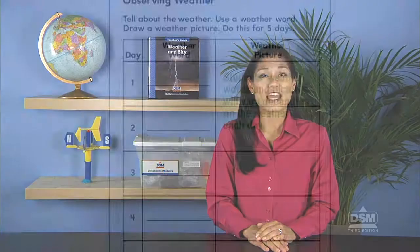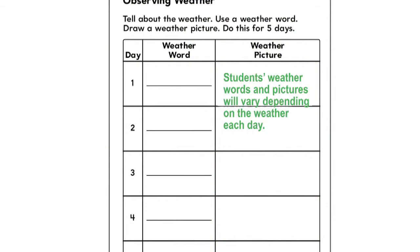To conclude Session 1, distribute a copy of Activity Sheet 1 to each student and instruct students to observe the weather each day for the next five days and record their observations on the Activity Sheet.